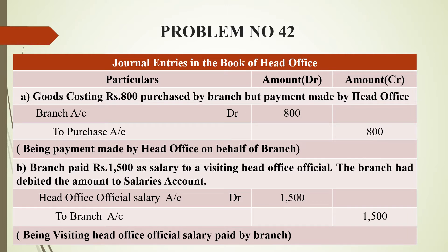The next adjustment is: branch paid rupees 1500 as salary to a visiting head office official. The branch had debited the amount to salaries account. The entry is: head office official salary account debit, to branch account credit. Branch account is credited because 1500 has gone out from the branch, and head office official salary is still inside the head office.